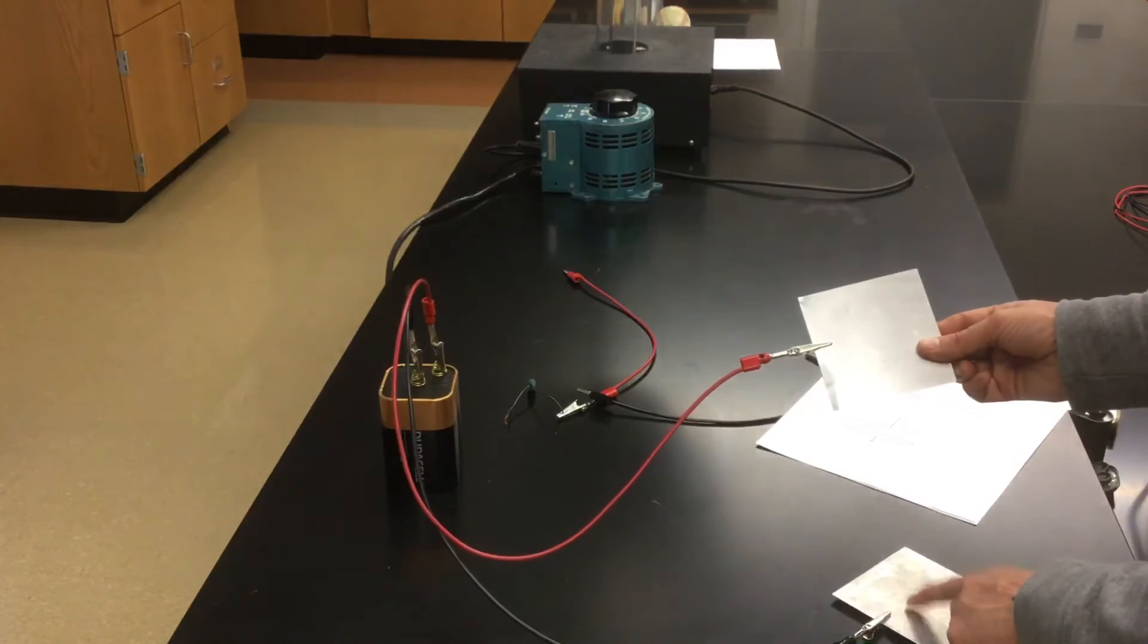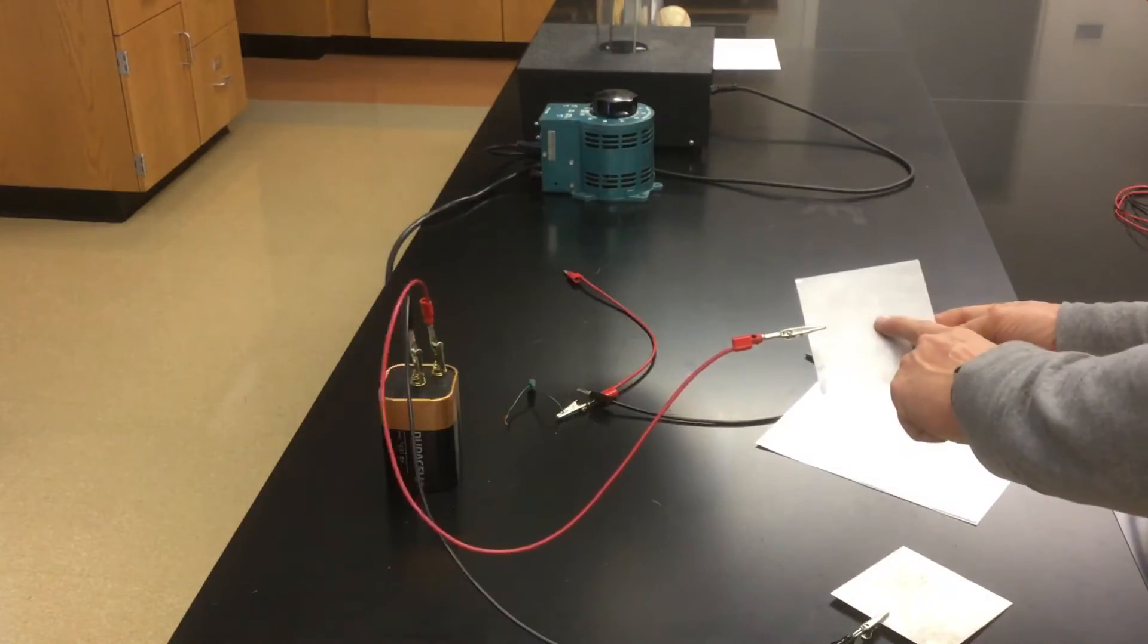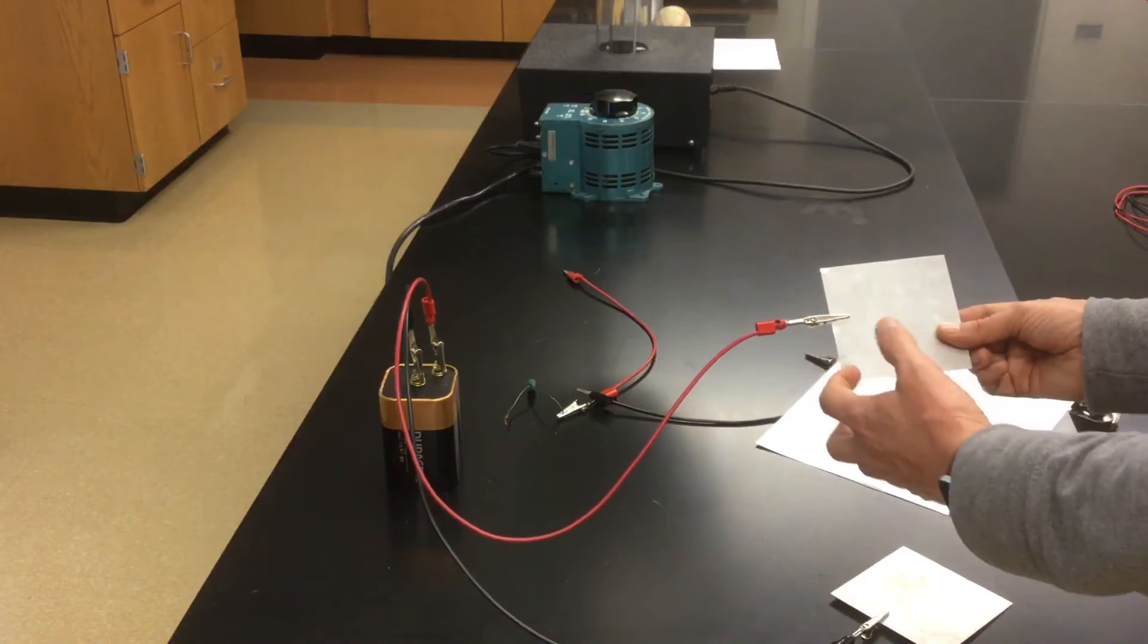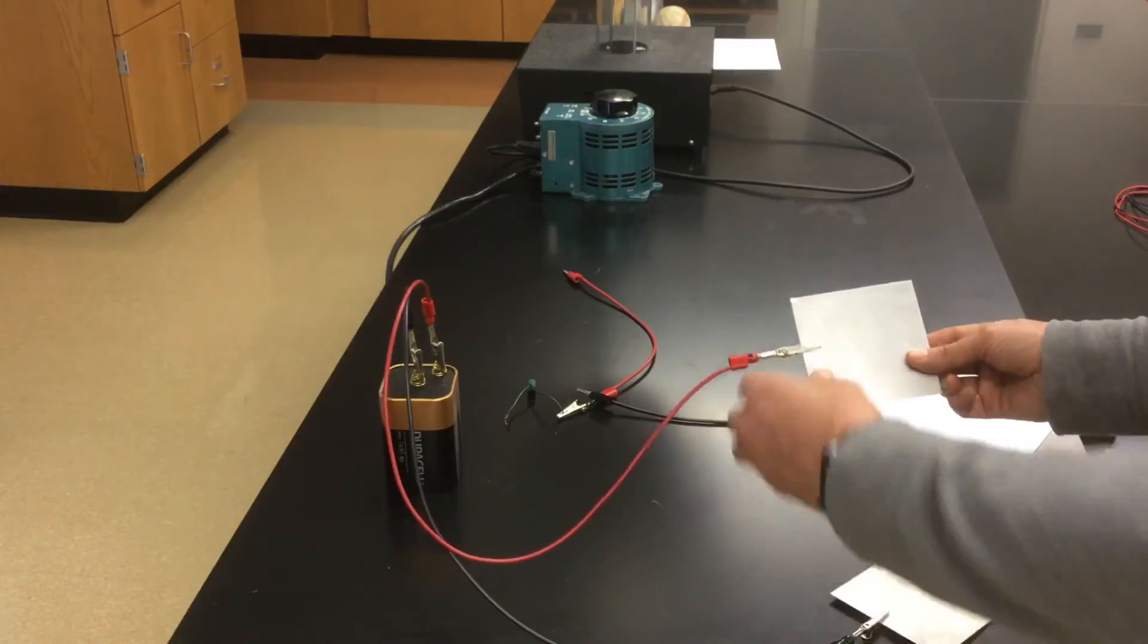The fact is, the electrons that are on this plate would love nothing more than to come back to neutralize this plate. And so that desire to neutralize, it represents a form of electrical potential energy.